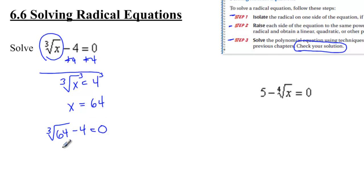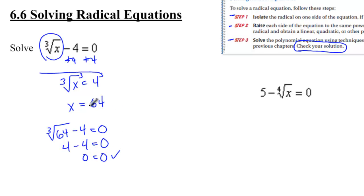The cube root of 64 is 4, and that would leave me with 4 minus 4 equals 0, and 0 equals 0. So that checks out and we're good to go. x equals 64 — that first problem is solved.